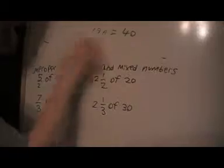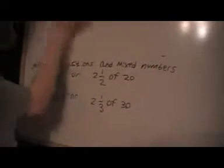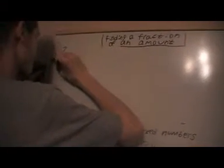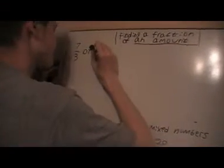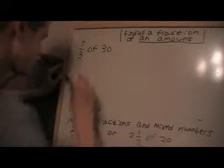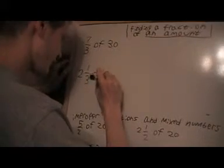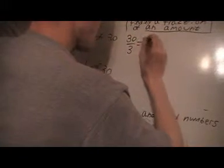Before we finish, 7 thirds of 30, or could be 2 and a third of 30. So same method, 30 by 3 is 10, times that by 7, I get 70.